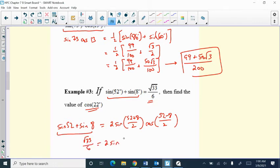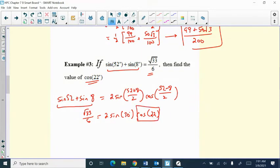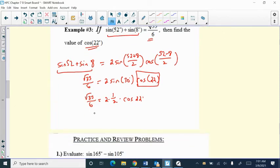So then that's two sine of, well, 52 plus eight is 60 over two is 30. So that worked out nice. And then cosine, well let's see, 52 minus eight is 44 divided by two is 22. Oh, okay. That's why they're asking us to find cosine of 22, because we can actually solve for this quantity. So sine of 30 degrees is one-half. So we get root 33 over six equals two times one-half and then times cosine of 22. And really the two and one-half cancel. So that actually worked out kind of crazy. Root 33 over six is equal to cosine of 22, which is really nice.